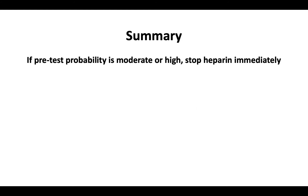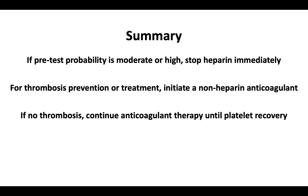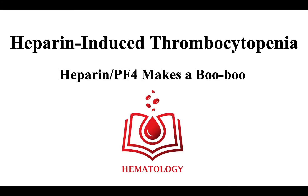In summary, if the pretest probability is moderate or high, stop heparin immediately. For thrombosis prevention or treatment, initiate a non-heparin anticoagulant. If there is no evidence of thrombosis, continue anticoagulant therapy until platelet recovery for about four weeks. This brings us to the end of our three-part series on heparin-induced thrombocytopenia.